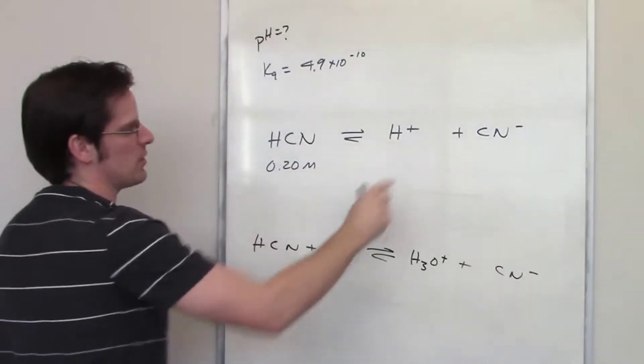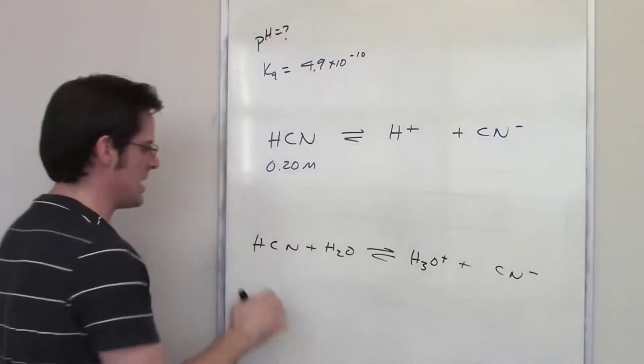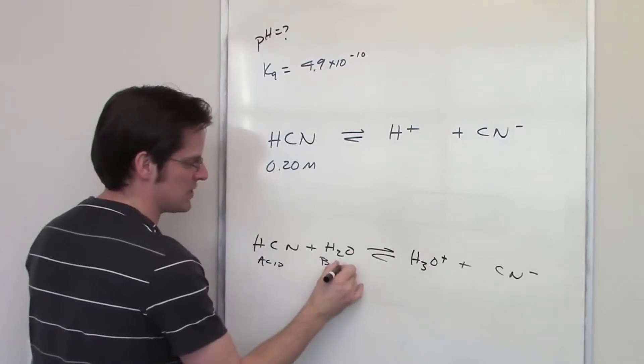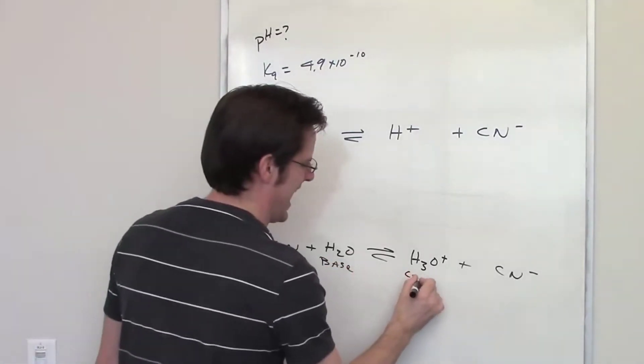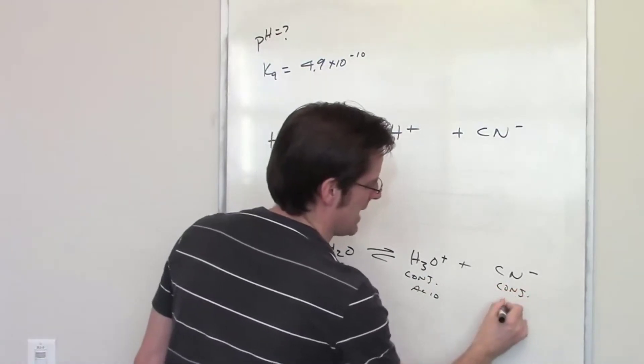What we write up here is sort of the simplified lazy person's way of writing it out. In case any of you care, because this is the thing releasing the hydrogen it's the acid, this is the guy accepting the hydrogen, it's a base. This becomes the conjugate acid and this thing becomes the conjugate base.